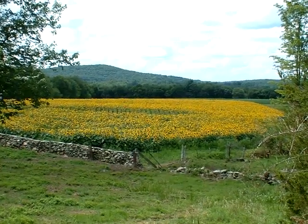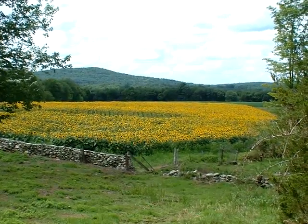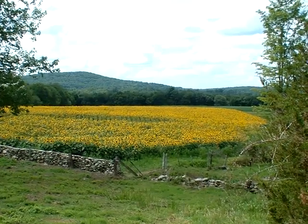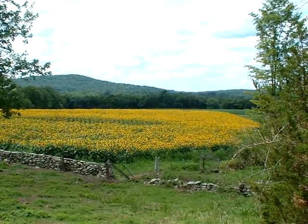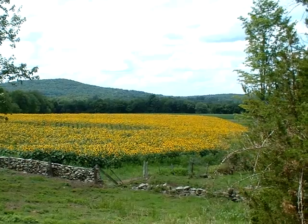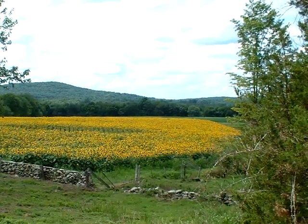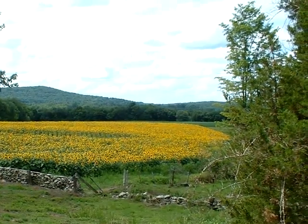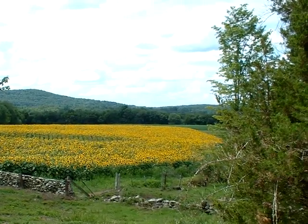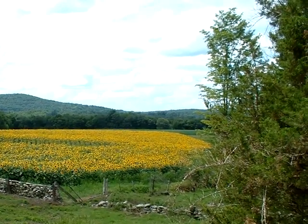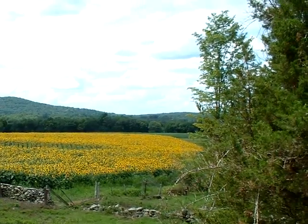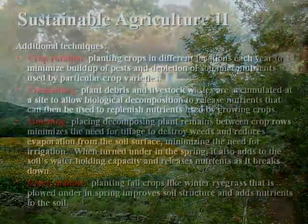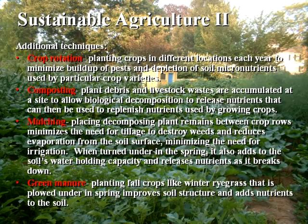Today we're going to be continuing our discussion of sustainable agriculture, and under that heading we're going to talk about agricultural pests and what kinds of procedures are available for controlling pests and diseases in a sustainable way. We've already talked about some of these things and looked at some pictures, but let's review them again and look at a few additional examples.